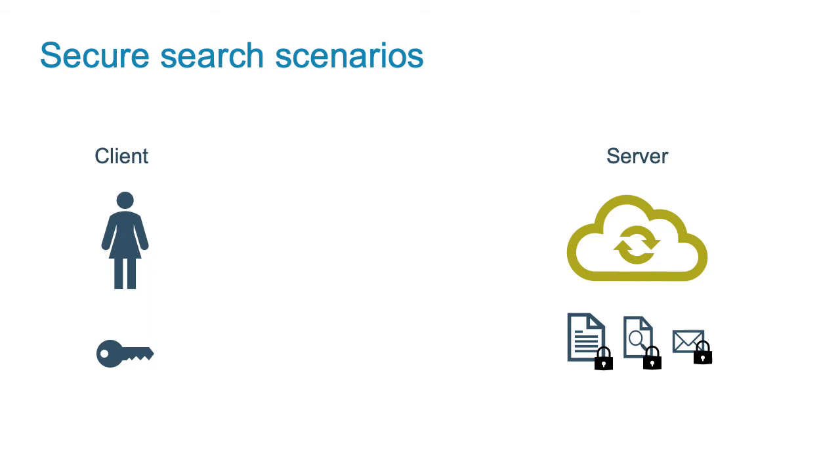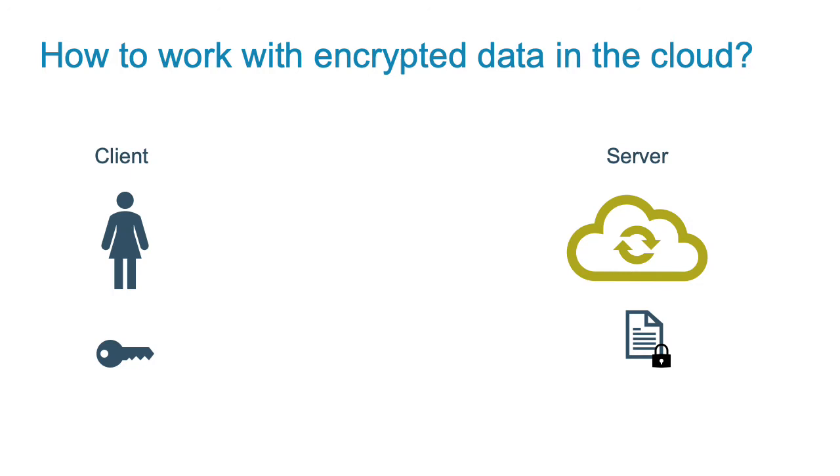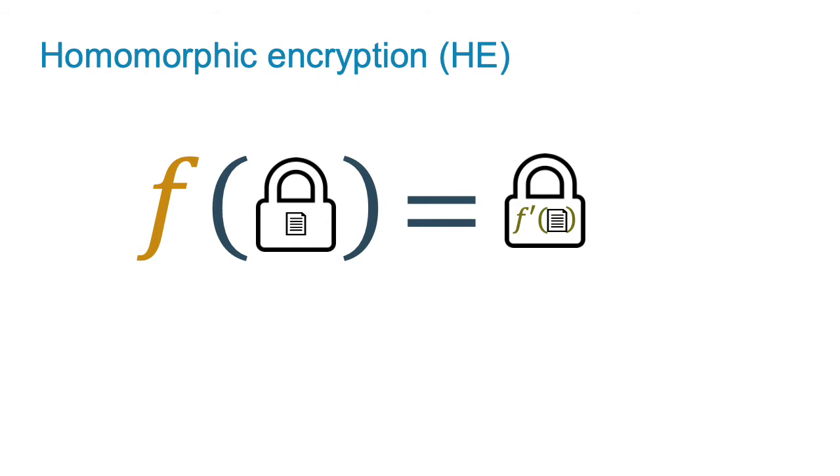Our security model assumes that the server is semi-honest and oblivious to the outsourced data, search queries and related search results. Indeed to hide data the client can just encrypt it. But she must choose an encryption scheme or a protocol that allows operations on encrypted data without decrypting it. In other words every client's query is an encrypted function that should be performed by the server without any knowledge of the secret key of the client.